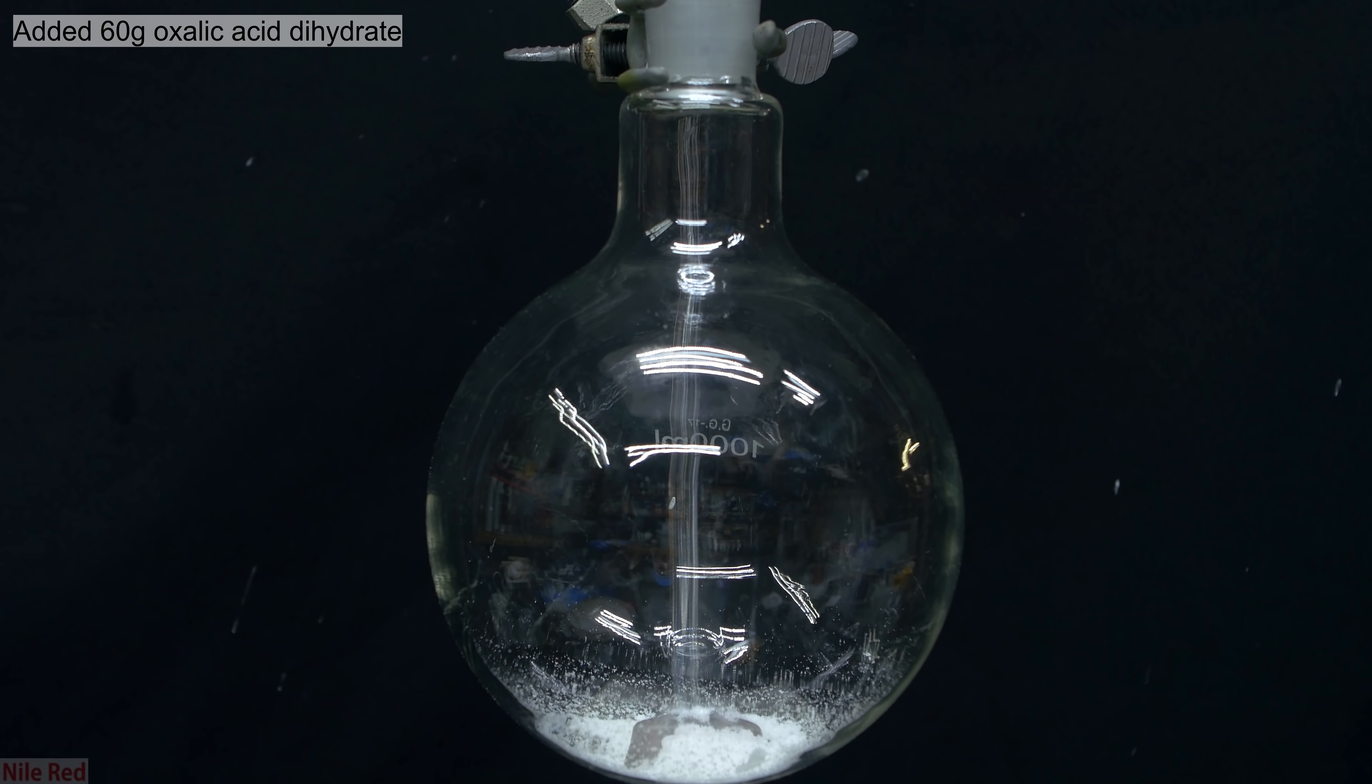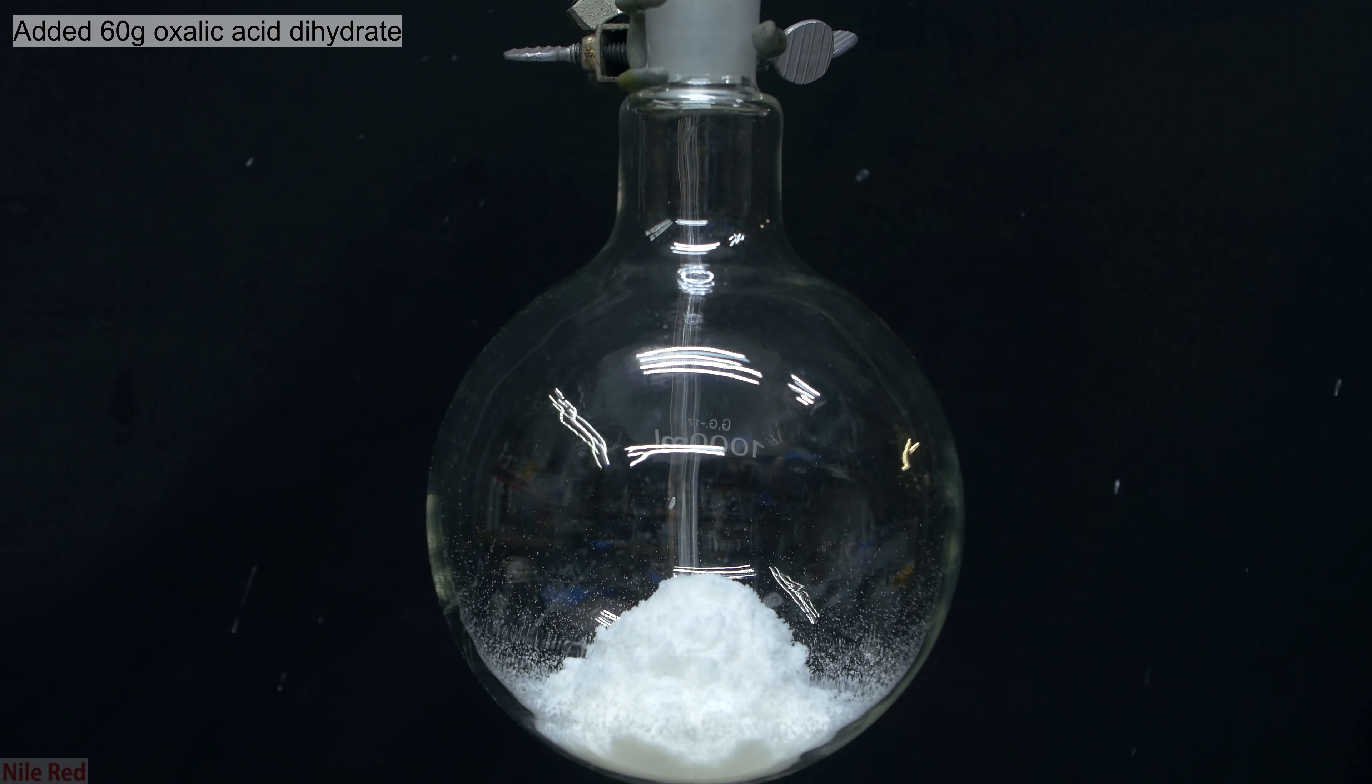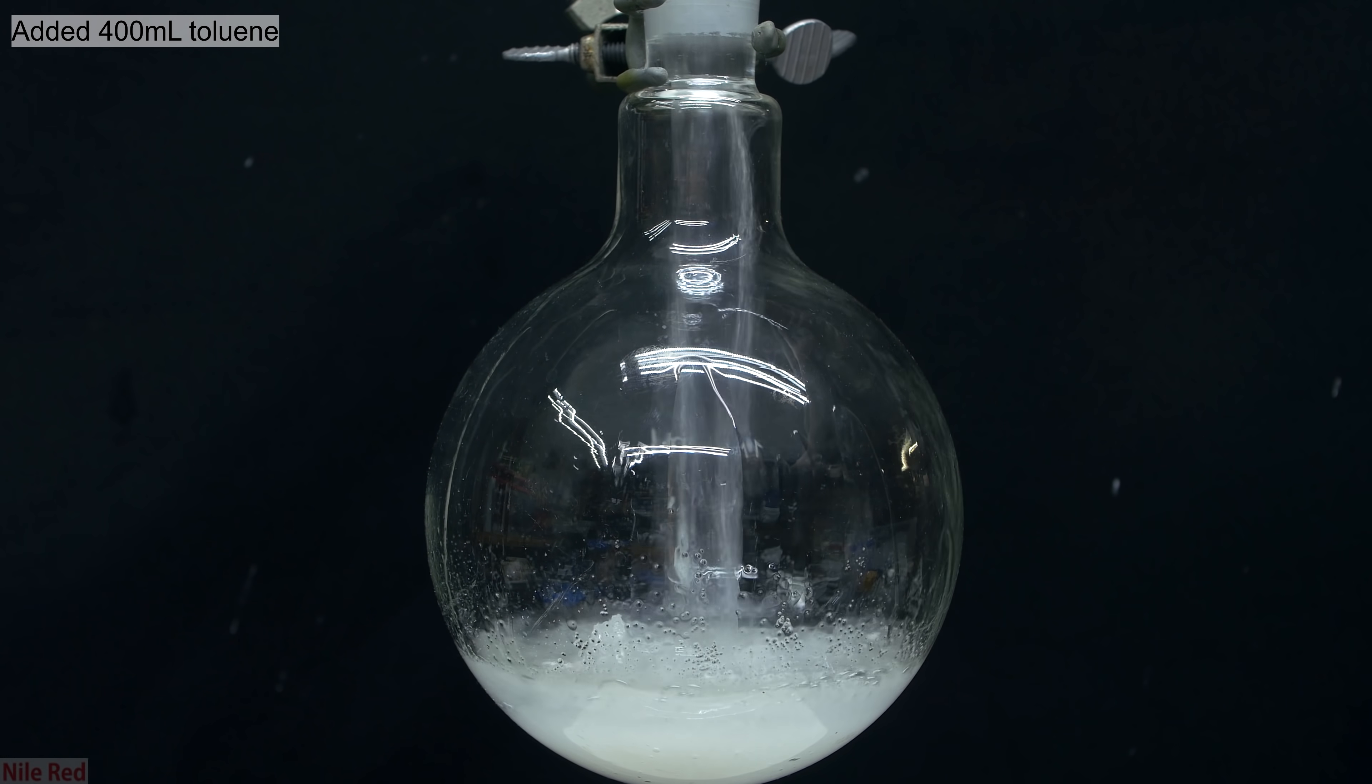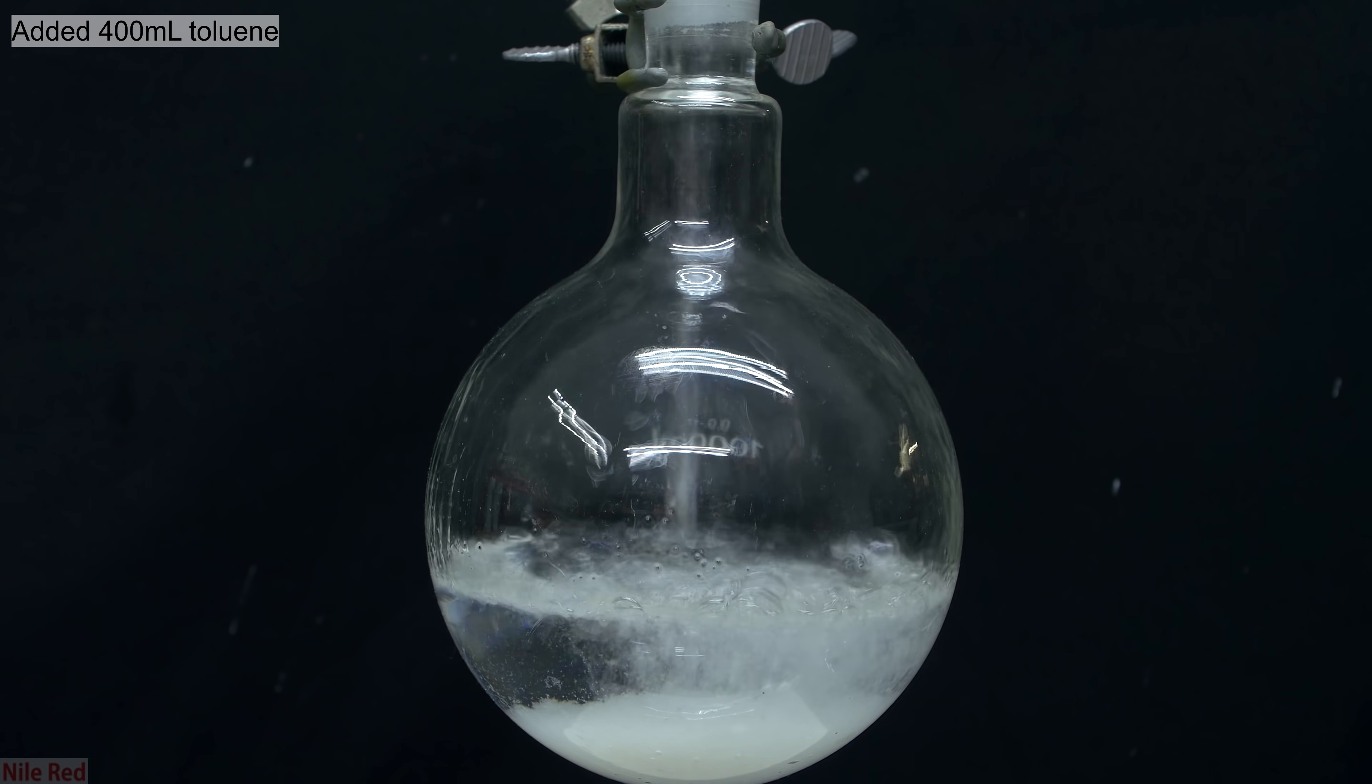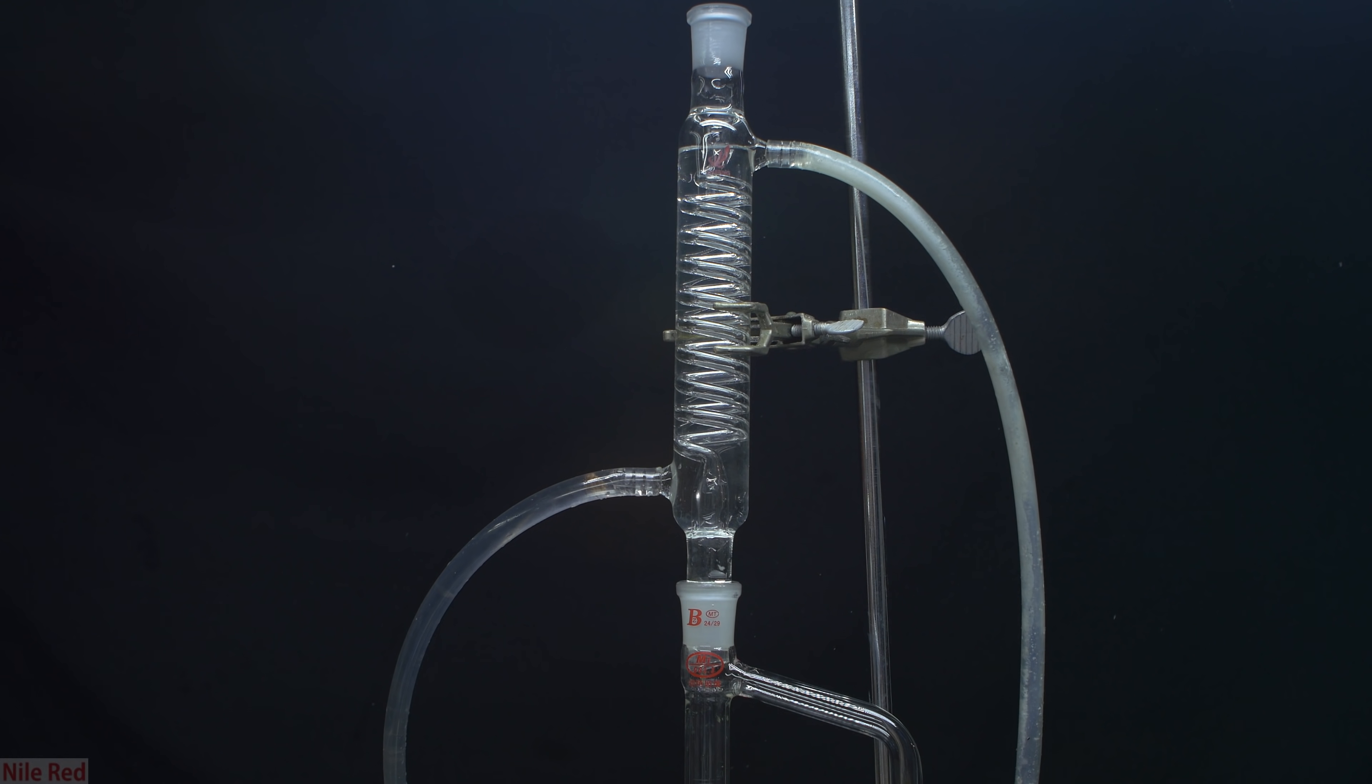I started things off by adding about 60 grams of oxalic acid to a 1 liter round bottom flask. On top of the oxalic acid, I pour in about 400 milliliters of toluene. Once this is done, above the flask, I can put together the Dean-Stark apparatus and the cold water condenser.